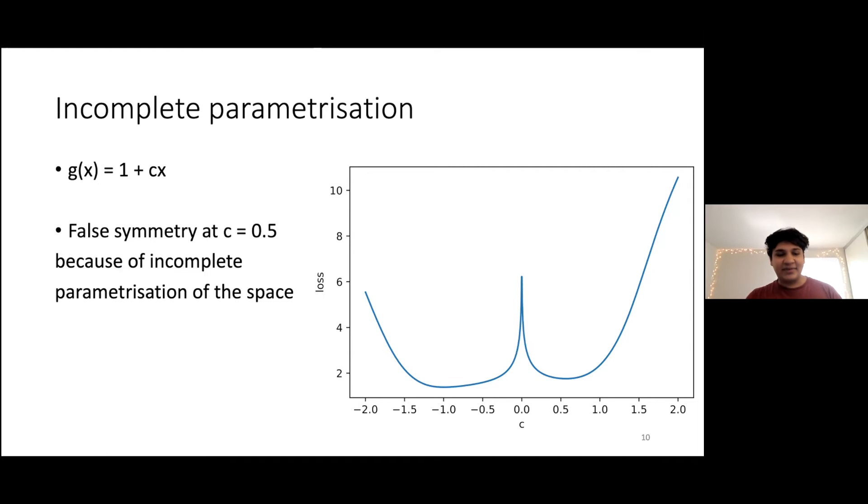This is more of a caveat than a genuine example because this is too simple. We know that we shouldn't be parametrizing our generator with one plus cx. It should be b plus cx because there are two variables here of one. But in larger dimensions, it is substantially less clear. So just as a simple example to illustrate the dangers of incomplete parametrization. If you parametrize the generator incompletely, what can happen is that you can create false minima. For example, there is a false symmetry at 0.5, which simply shouldn't be there. One plus half x is not a symmetry of the one-dimensional Gaussian.